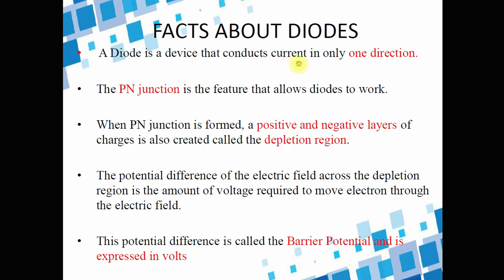A diode is a device that conducts current only in one direction. So, if it conducts current in only one direction, then definitely in the other direction, it does not conduct. Hence, it is proven that this diode can be used as a switch. Sometimes it can conduct in one direction, but when the current reverses its direction, it cannot conduct. So it can act as a switch, and a diode has many uses.